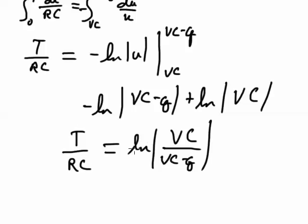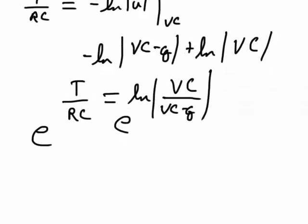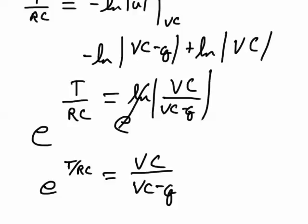At this point, to put it in the form that we're familiar with, I'm going to take e to the power of both sides. And the reason I'm doing this is because e to the natural log of something cancels out. So I will have e to the t over RC equals VC over VC minus q. Now let's see how that works out.